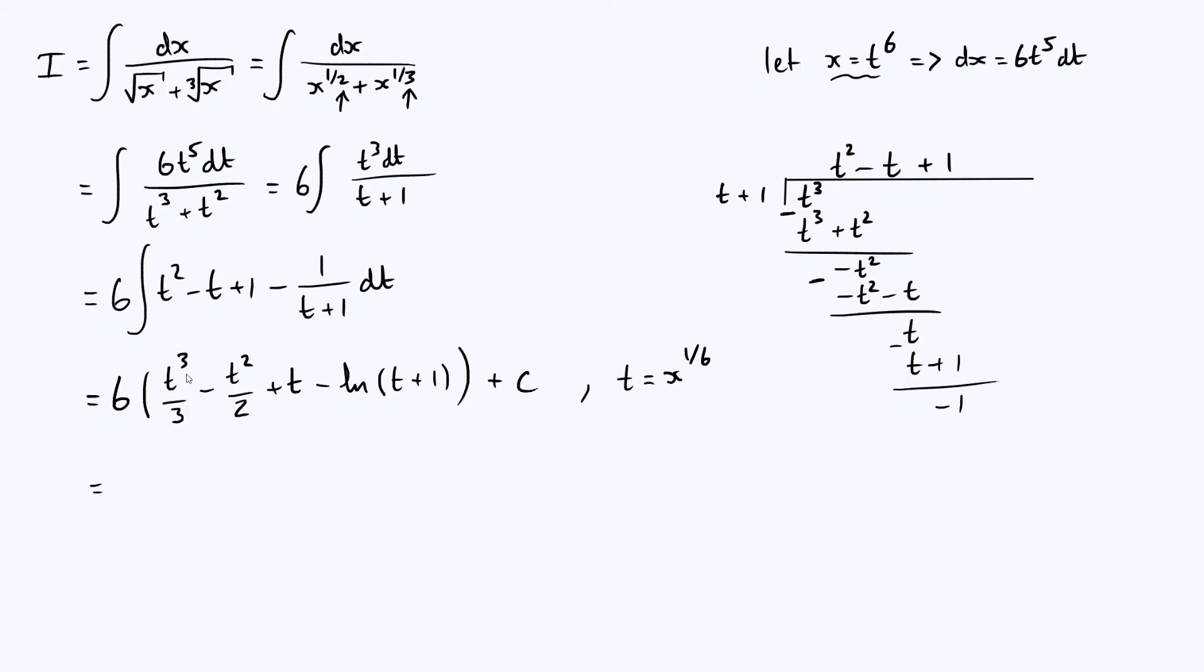Our first term is 6 thirds of t cubed, so 6 thirds is the same as 2. So 2, and t cubed is x to the 3 over 6, which is x to the 1 half, which is just root x. So we get 2 root x.